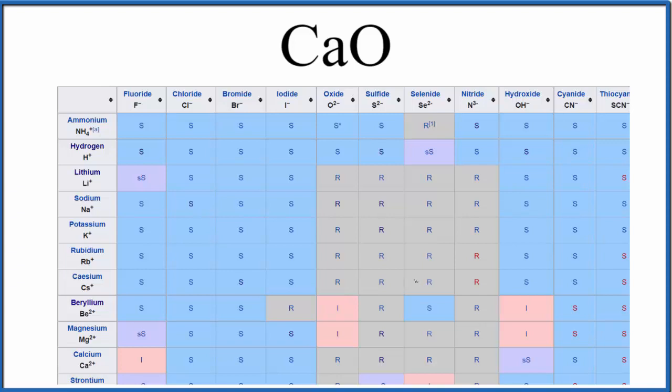We have a solubility table here, part of a solubility table. We'll find calcium. Let's go down and way down here's calcium, and we're looking for oxide. Oxide is right here, so we'll go down and then over.